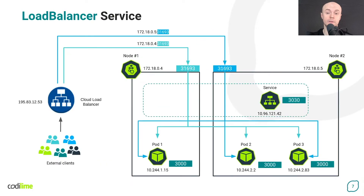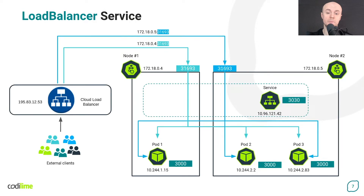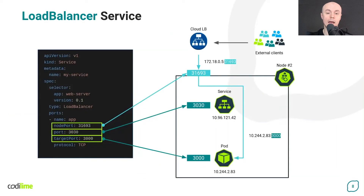If you install your cluster in the cloud, you can also use a LoadBalancer service. It assumes the use of a cloud load balancer, which can be relatively easily and quickly launched in the cloud and integrated with your cluster. In this case, external clients do not send the request directly to the cluster nodes as they do when NodePort service is used. Instead, they use the load balancer's IP address, which can be public. This approach allows you to provide access from the internet to selected workloads running in your cluster in a quick and safe manner. To create a LoadBalancer service, you can rely on the NodePort manifest file discussed previously — you only need to change the service type to LoadBalancer. This will also automatically create the appropriate NodePort and ClusterIP services, as LoadBalancer service is actually a kind of extension to the NodePort service.